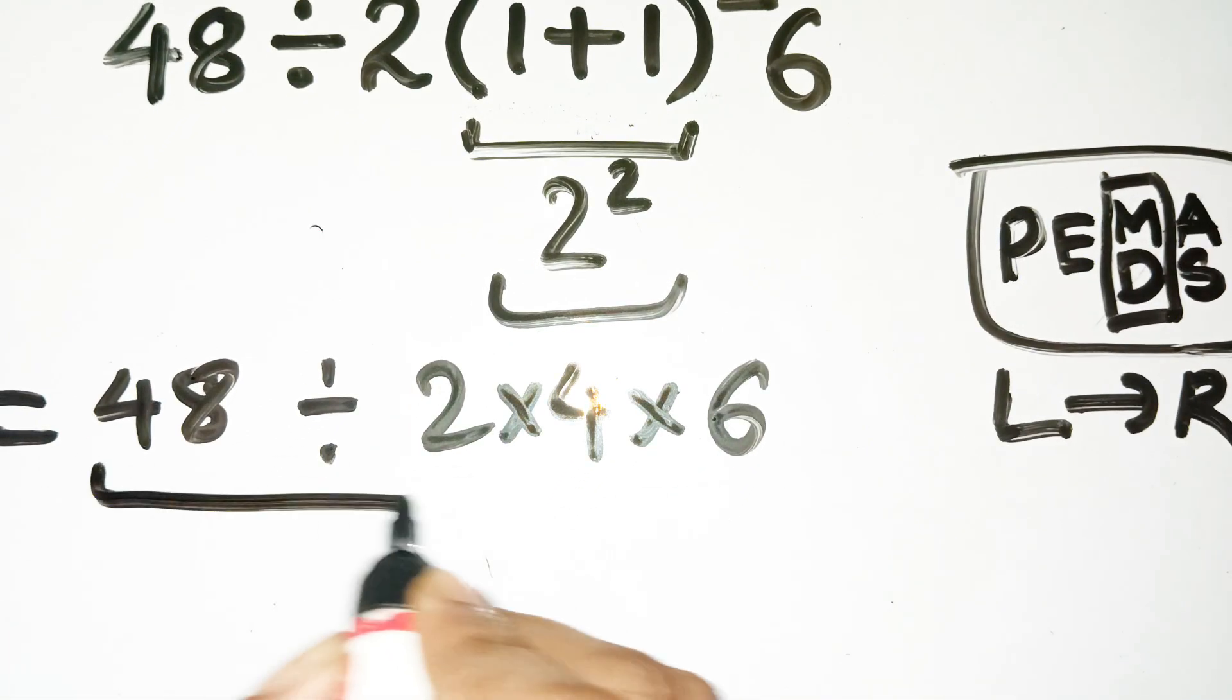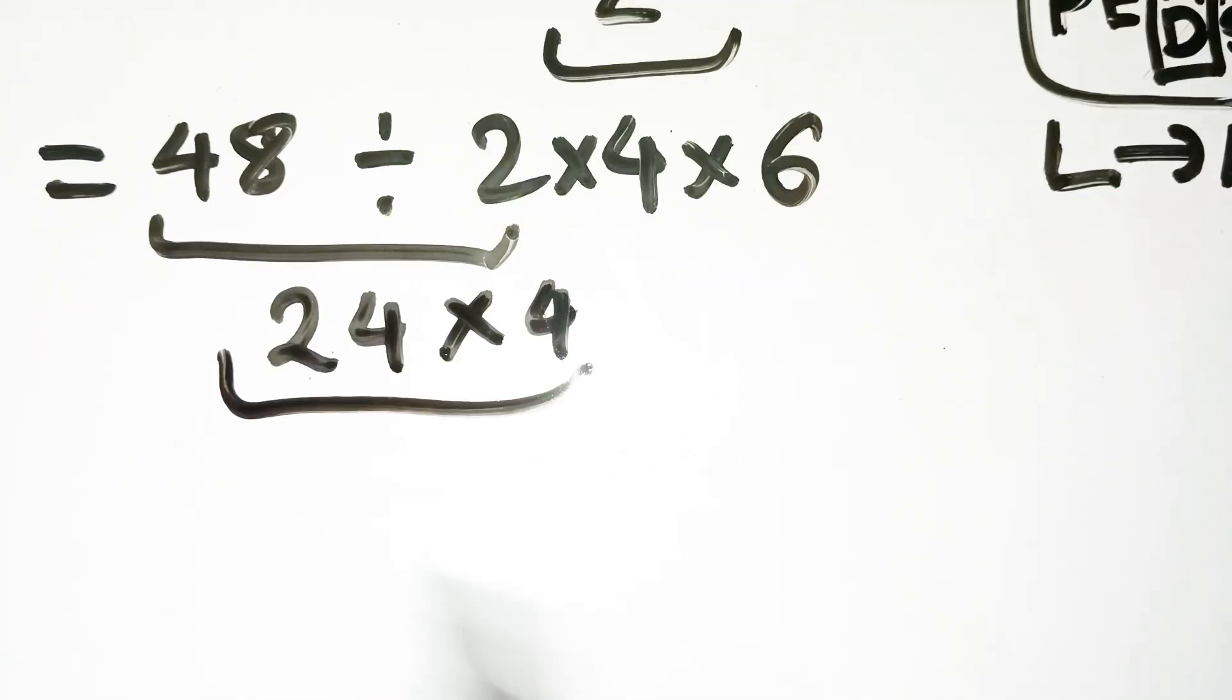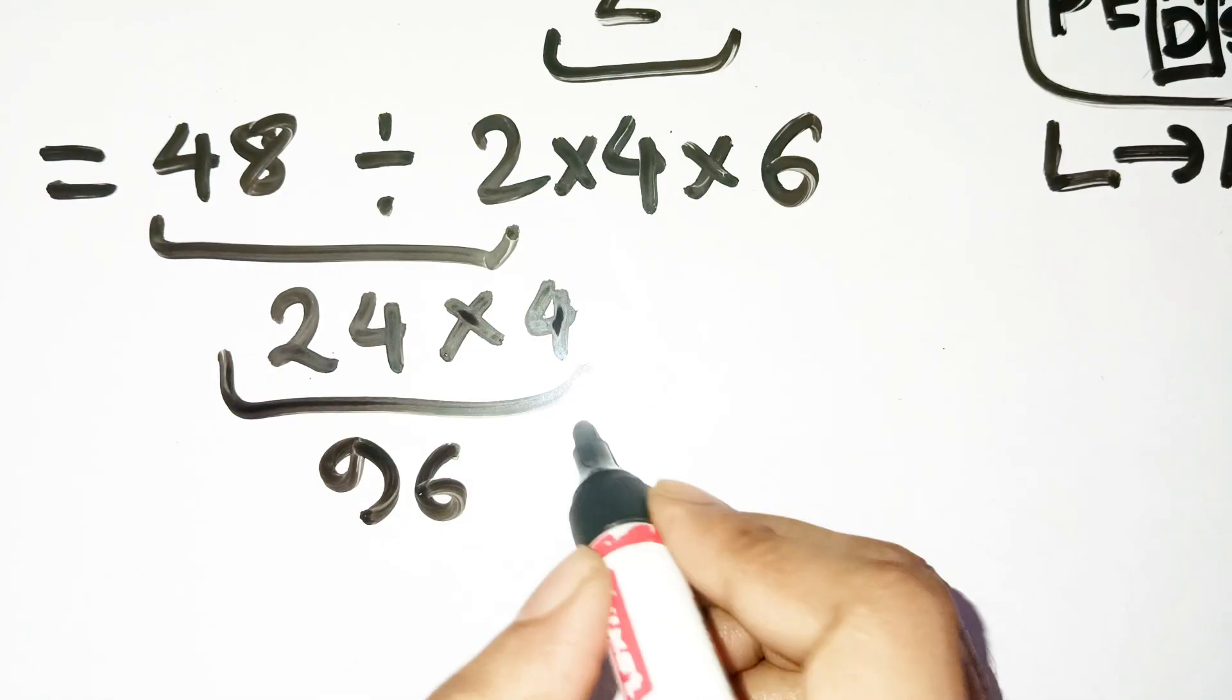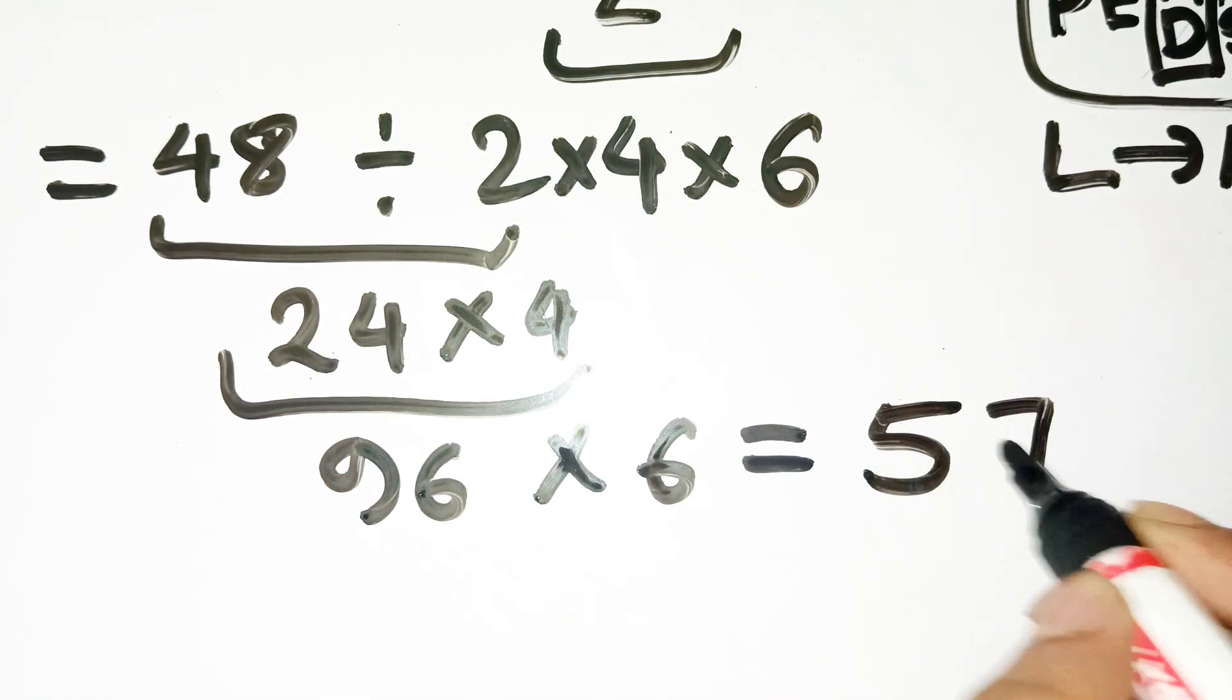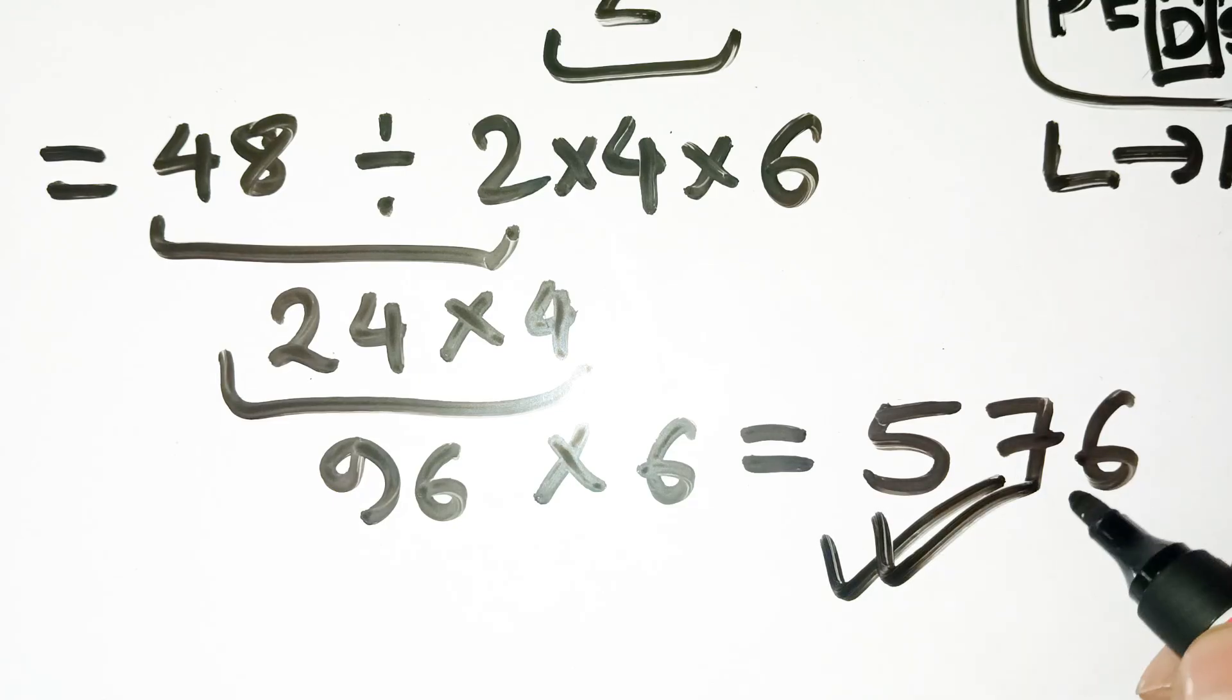First, 48 divided by 2, that's 24. Then, 24 times 4, that's 96. Finally, multiply 96 by 6, and that gives 576. So the correct answer isn't 1. It's 576.